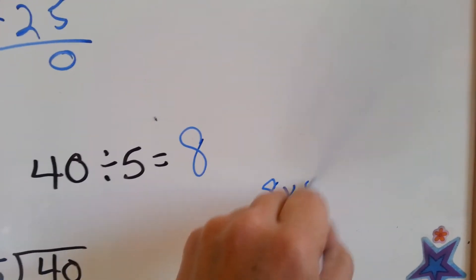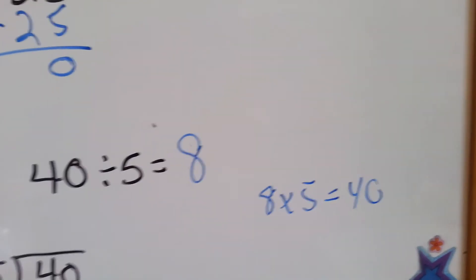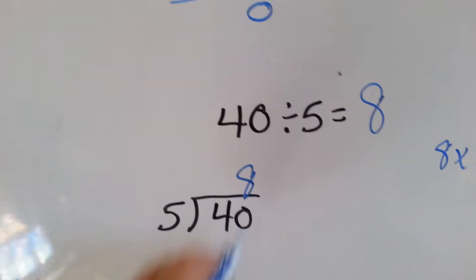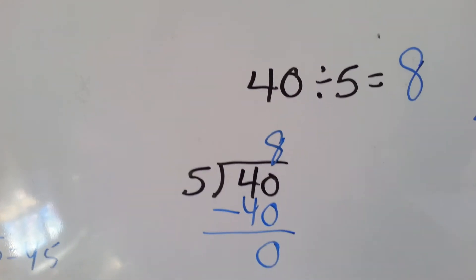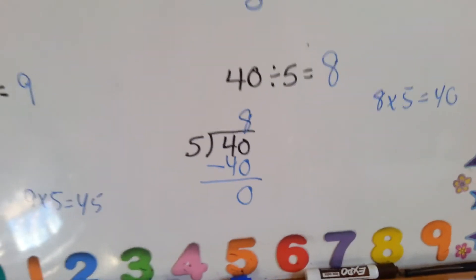8 times 5 equals 40. So, we're going to put an 8 up here. 5 times 8 is 40. Do our subtraction, get our 0, and our long division problem is finished.